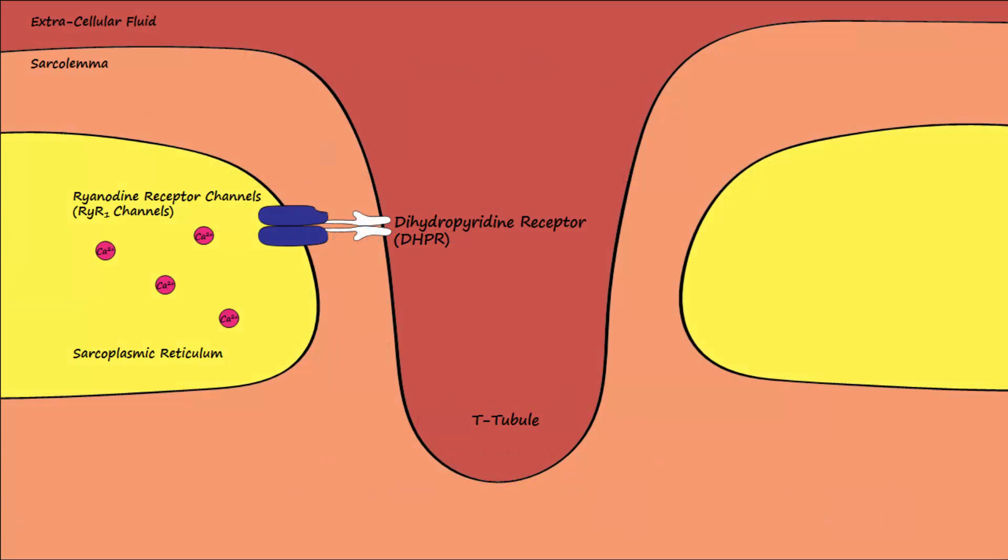Dantrolene binds to the ryanodine channel and prevents it from opening when the action potential reaches the DHPR. This prevents release of calcium from the sarcoplasmic reticulum and prevents muscle contraction.